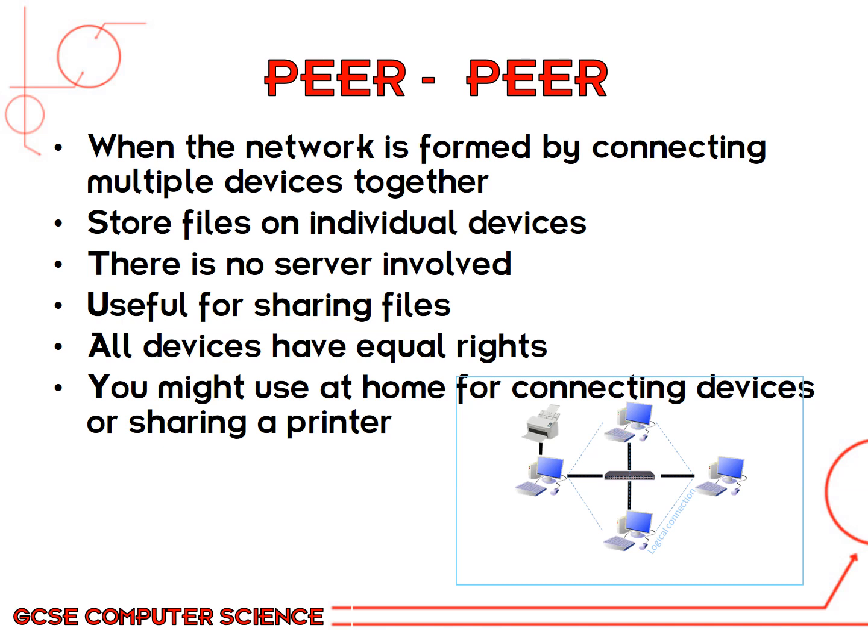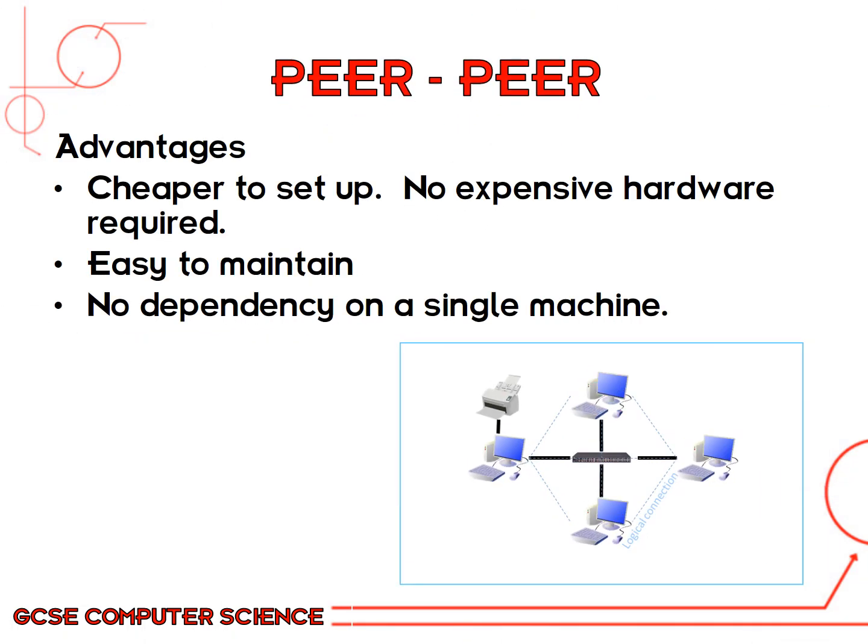When downloading a file in peer-to-peer, it can be downloaded from multiple different places. You could use a peer-to-peer relationship at home for connecting devices or sharing a printer. The obvious advantage is that it's much cheaper to set up — no particularly expensive hardware is needed. It's much easier to maintain and it's not dependent on a single machine, so if one machine becomes faulty the other computers can still function on the network.